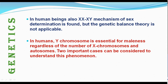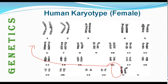In human beings also, the XX-XY mechanism of sex determination is found, but the genetic balance theory is not applicable. In humans, the Y chromosome is essential for maleness, regardless of the number of X chromosomes and autosomes. This means if there is a Y chromosome, it will form a male. But if the Y chromosome is absent, whether there is one X chromosome or two X chromosomes, the individual will become a female. So for maleness, the Y chromosome is essential.